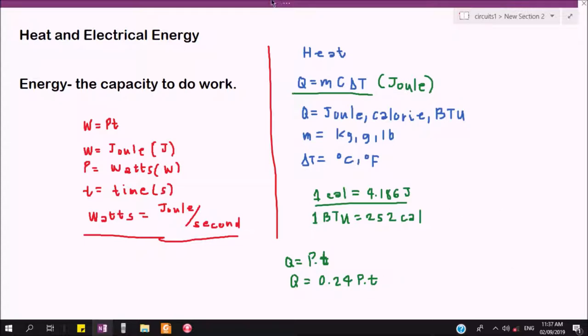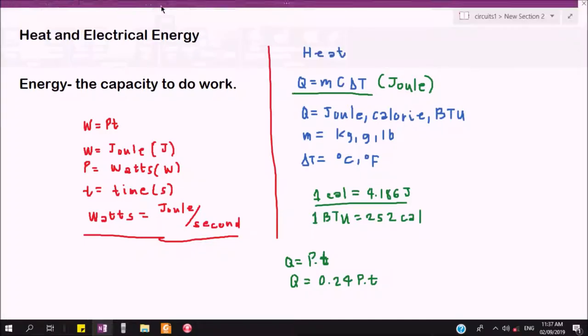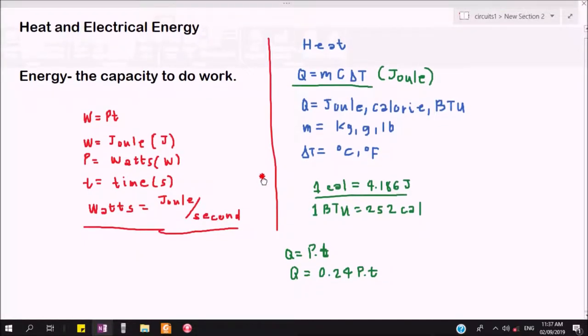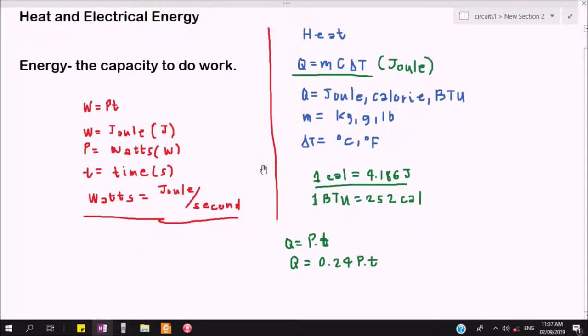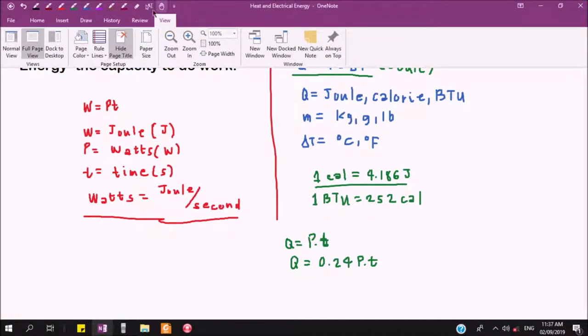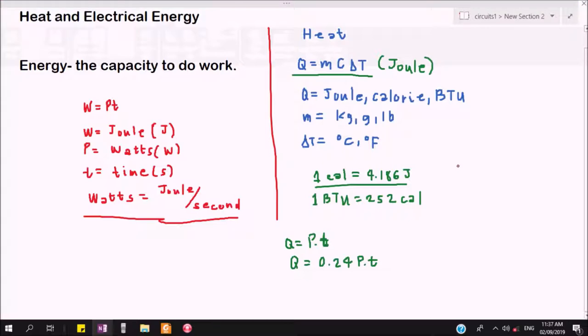Then the next relationship—because this is tackling heat energy and power—we could also introduce efficiency. Efficiency is given by the formula: power input over power output times 100.